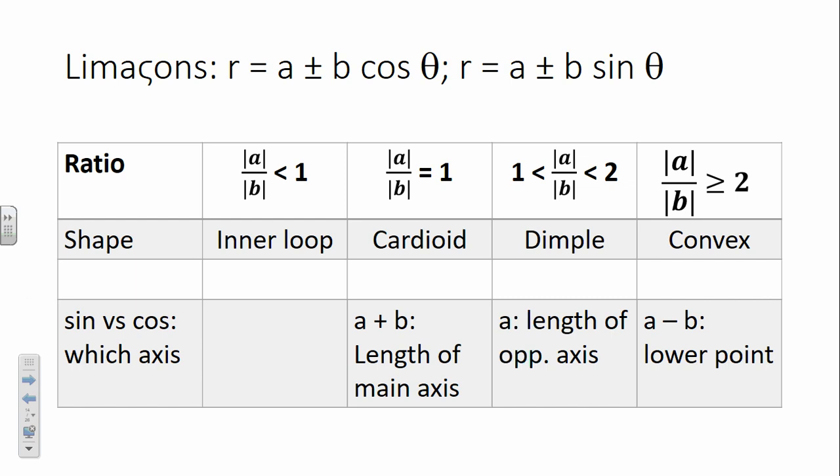Limaçons are of the form R equals a ± b·cosine theta, or R equals a ± b·sine theta. If the ratio |a| over |b| is less than 1, we get an inner loop. If |a|/|b| equals 1, we get a cardioid. If |a|/|b| is between 1 and 2, we get a dimpled limaçon. And if |a|/|b| is greater than or equal to 2, it becomes convex.